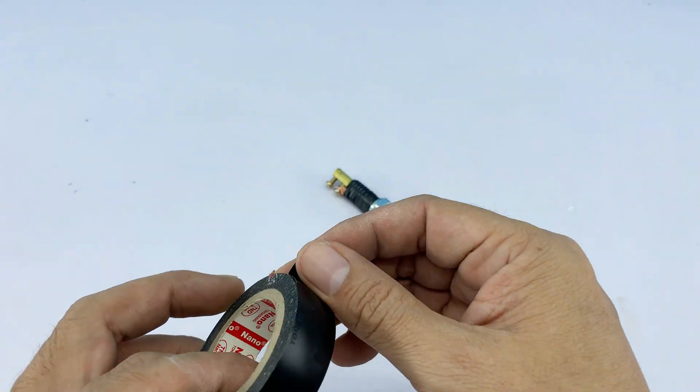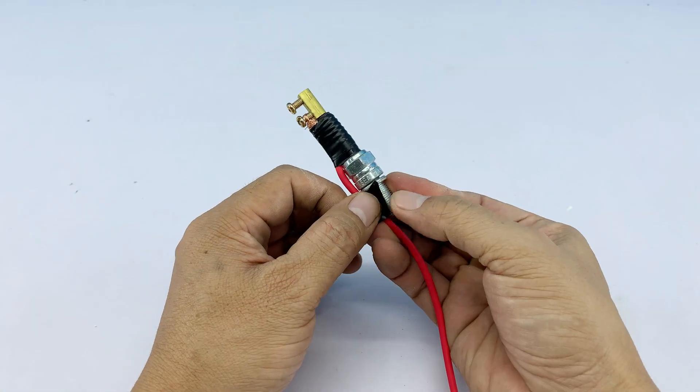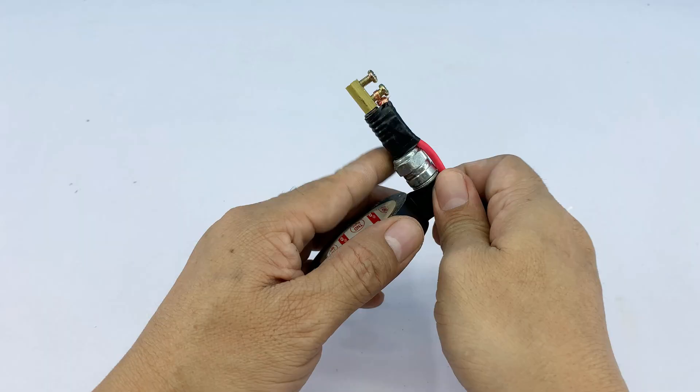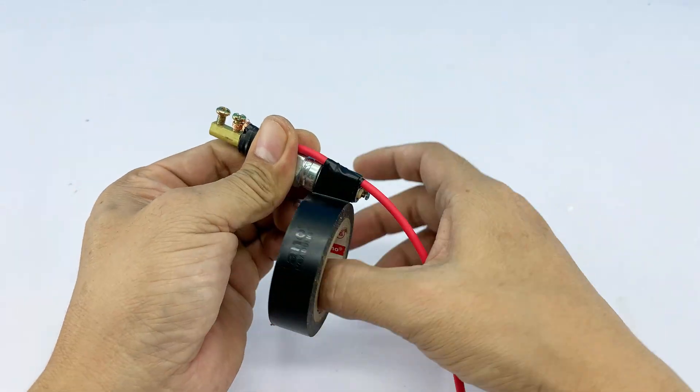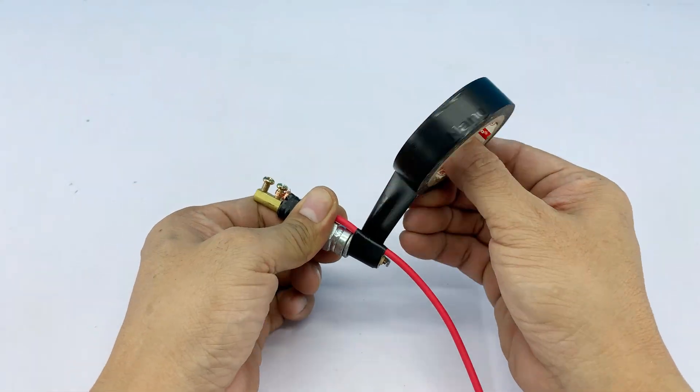When wrapping, give the tape a gentle stretch so it clings tightly, with each layer slightly overlapping the previous one. This helps it stay firm and durable during use.